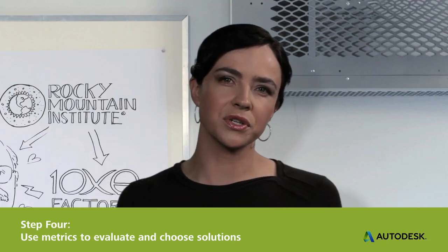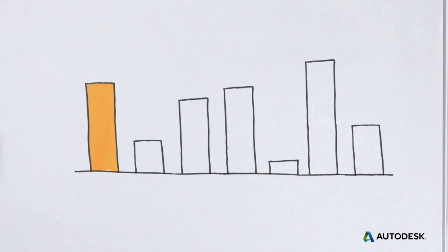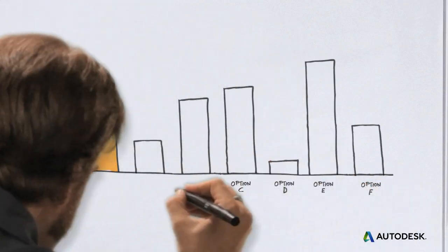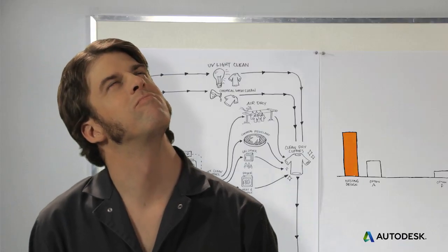Once you've got a lot of solutions, how do you choose between them? Well, you should go back to the goals you set when thinking about the lifecycle impacts of the design and assess each option. Some of these options will obviously be better than others so you can throw a bunch away quickly, but what about the best few choices that are left?